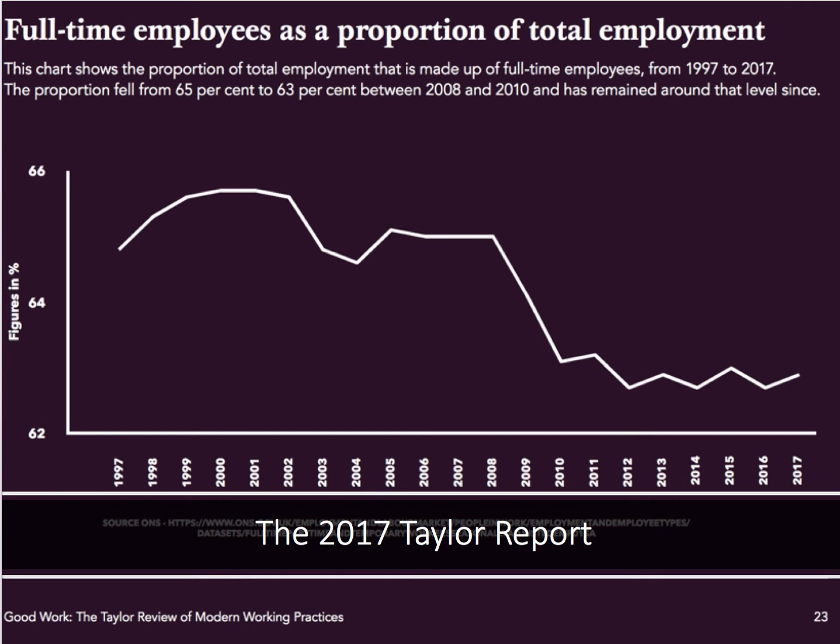The Taylor Report came out in 2017, entitled 'Good Work: the Taylor Review of Modern Work Practices', headed by Matthew Taylor from the RSA. They argued that despite overall strong levels of employment, there was evidence of persistent underemployment in the UK economy. Measures of underemployment which account for workers who want extra hours are higher than they were during the recent recession, despite some improvements in the last few years.